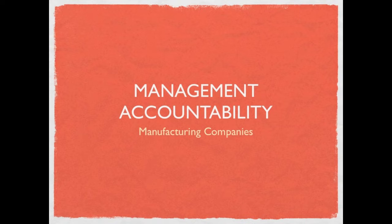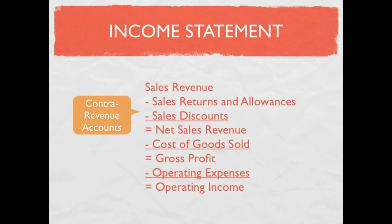This is part four in our management accountability series where we're going to be talking about manufacturing companies. The first thing I want us to be aware of, something we've already talked about, is the income statement for a manufacturing company. It is exactly the same as the income statement for the merchandising company, so we'll go through it another time really quickly here.